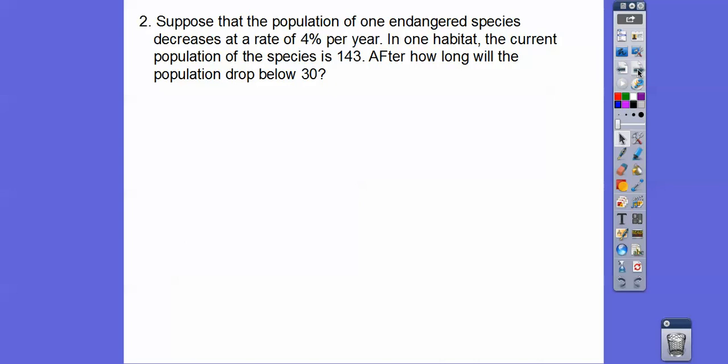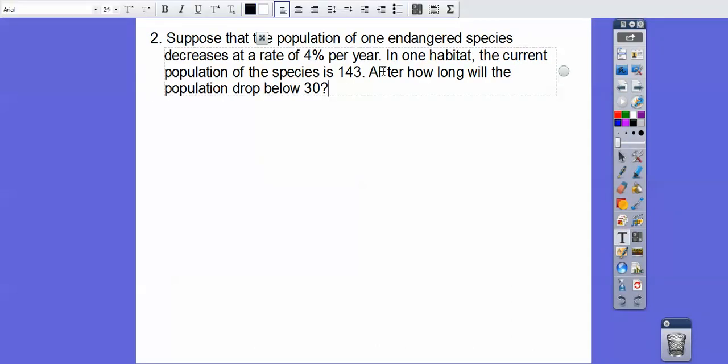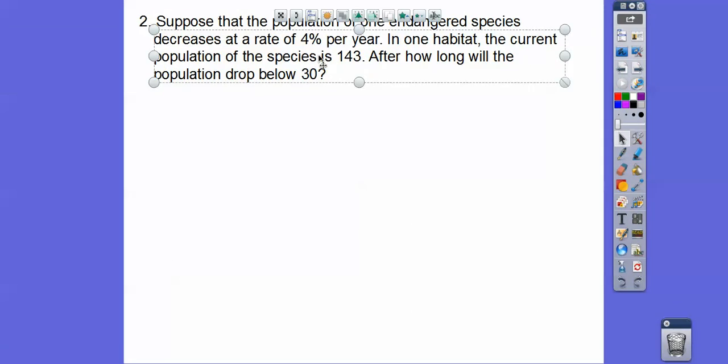Let's try one more. Suppose that the population of an endangered species decreases at a rate of 4% a year. In one habitat, the current population is 143. After how long will the population drop below 30?